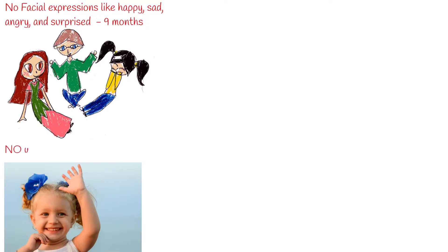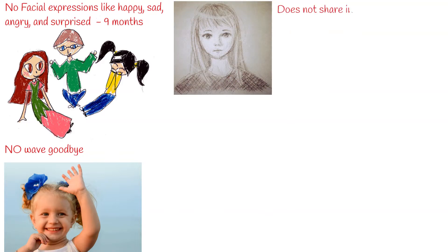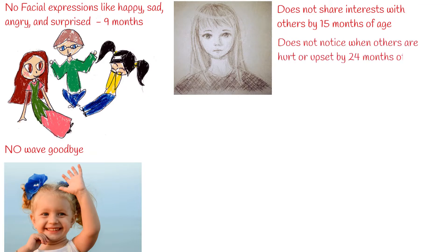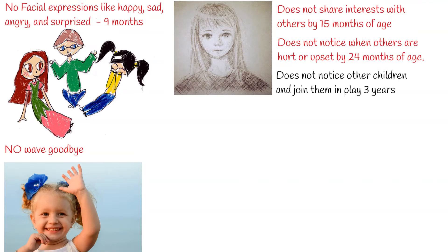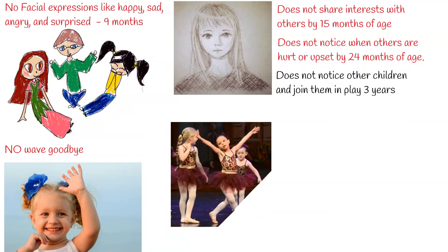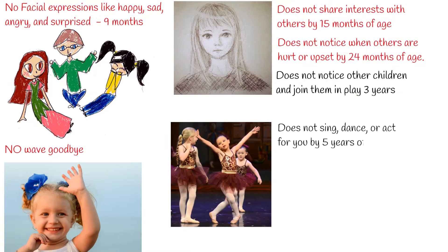Does not show facial expressions like happy, sad, angry, and surprised by 9 months of age. Uses few or no gestures by 12 months of age — for example, does not wave goodbye. Does not share interests with others by 15 months of age — for example, shows you an object that they like. Does not notice when others are hurt or upset by 24 months of age. Does not notice other children and join them in play by 3 years of age. Does not sing, dance, or act for you by 5 years of age.